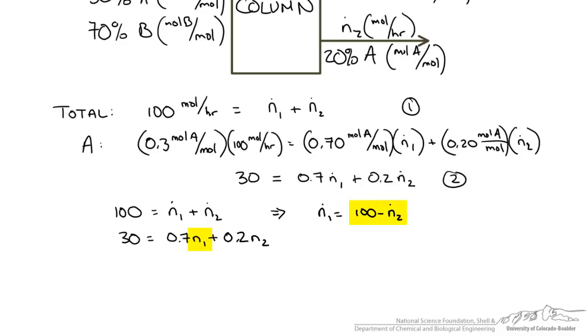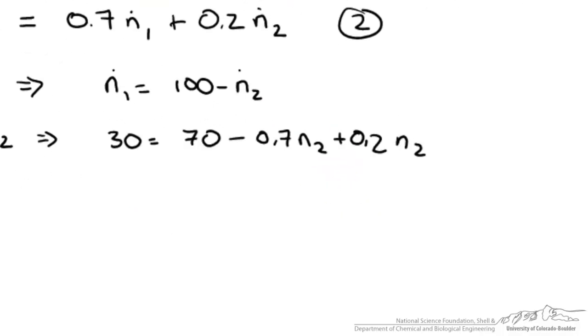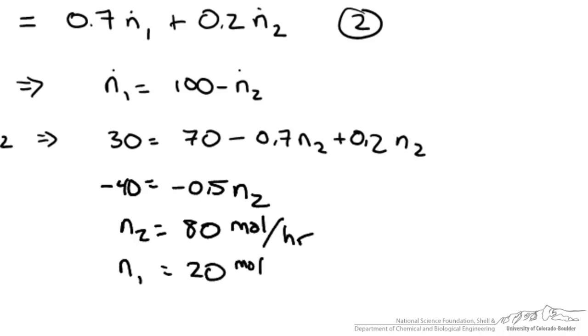Now we will take this n1 and we will plug it into our second equation. When we do this, now we get the following and we can simplify this so that we see that we can solve for n2. We get n2 equals 80 and we can plug this back into our other equation and solve for the other variable.